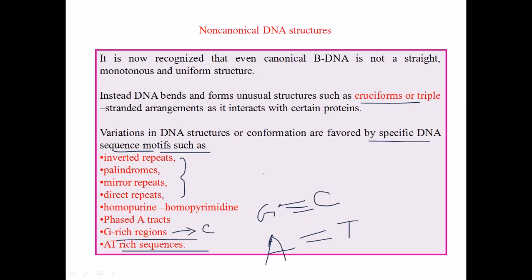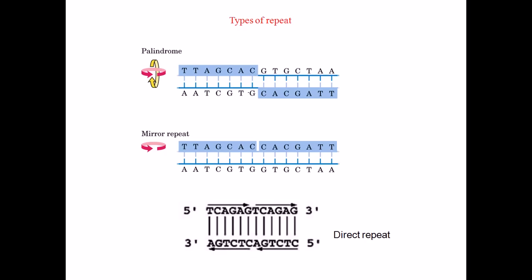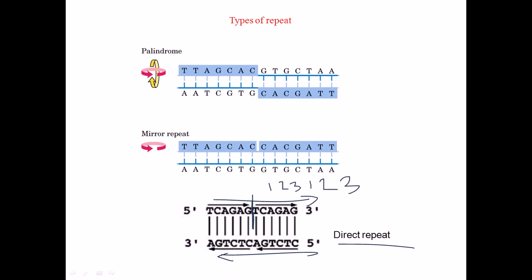Now let's look at the different types of repeats found inside DNA. A direct repeat is when the same sequence — for example, TCAGAG — repeats one after another in the same direction, both in the original strand and its complementary sequence. So if we have TCAGAG repeated as 1-2-3, then again 1-2-3, that is called a direct repeat.